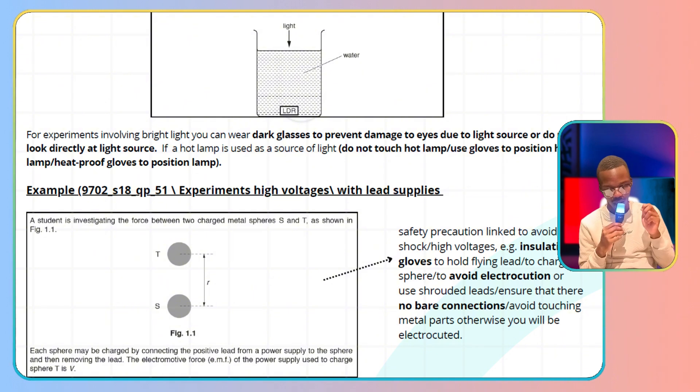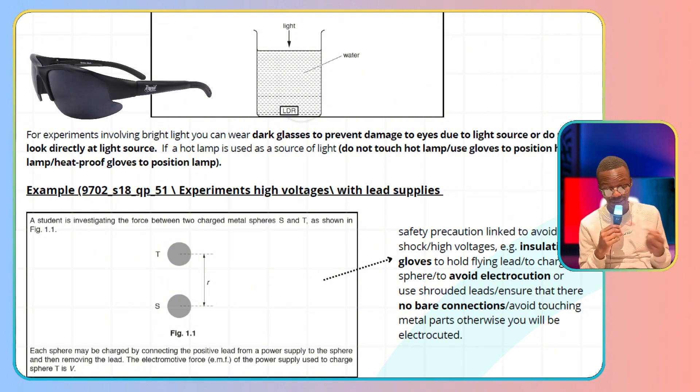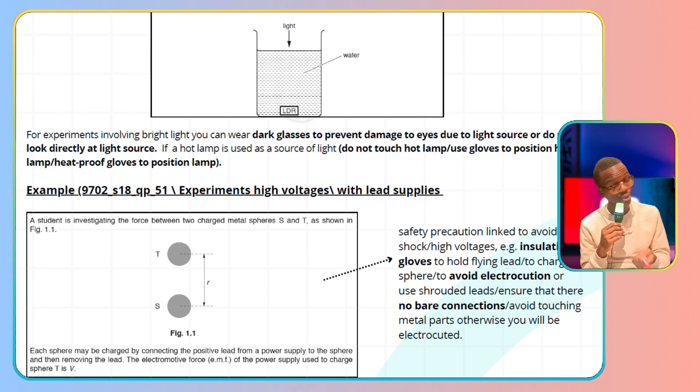For experiments involving bright lights, you can wear dark glasses to prevent damage to eyes due to the light source. Wear dark glasses with polaroid filters to be safe, or do not directly look at the light source. Don't look at it—why would you look at the light source?